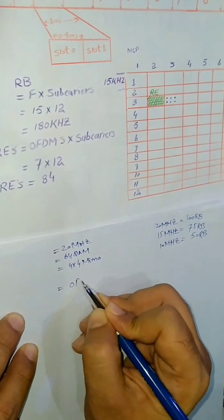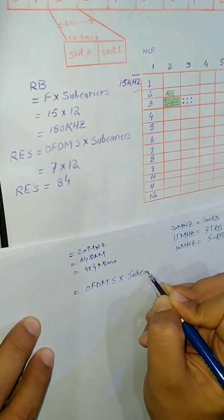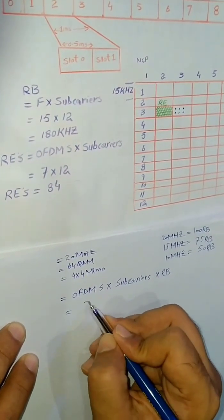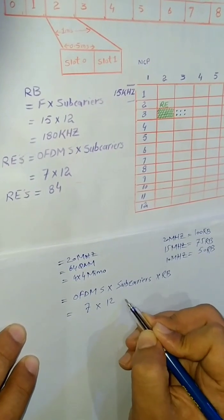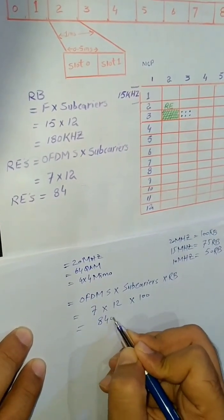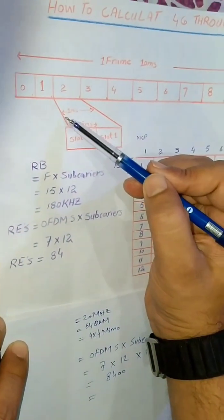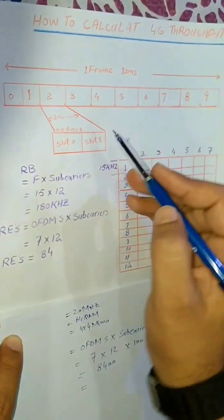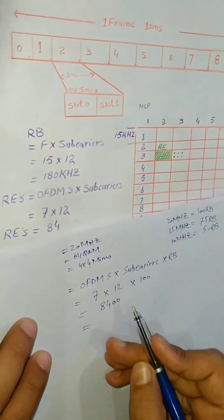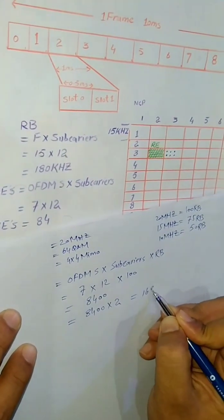First, we multiply the OFDM symbols by the number of subcarriers: seven OFDM symbols and 12 subcarriers, and in 20 MHz we have 100 RBs, giving us 8,400 REs per slot. One subframe contains slot 0 and slot 1, so there are two slots total. Therefore, 8,400 multiplied by two equals 16,800 REs per subframe.